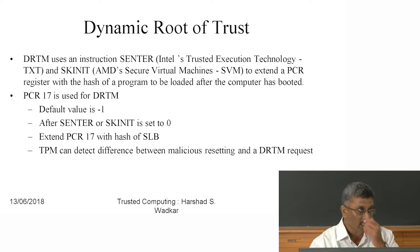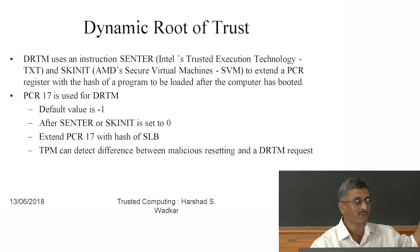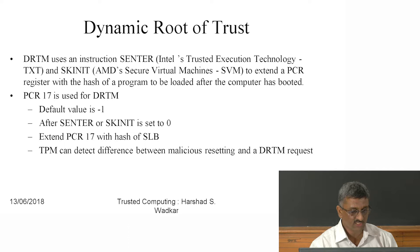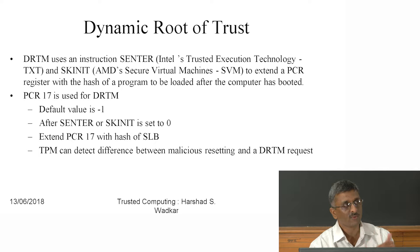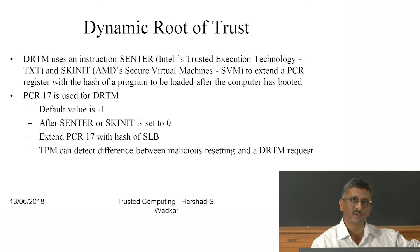When the SKINIT command is executed, PCR 17 is set to 0, then extended with the hash of the SLB (Secure Loader Block). TPM can detect the difference between malicious settings and a legitimate DRTM request. DRTM is used for application software development and testing where the loading sequence can change.